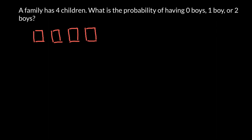The first child can be of two different genders — it can be a boy or a girl. The second child also can be a boy or a girl. So two variants for each child. If we multiply all these numbers, we are going to get 16. So this family may have 16 different combinations of how they may have children of different sex.